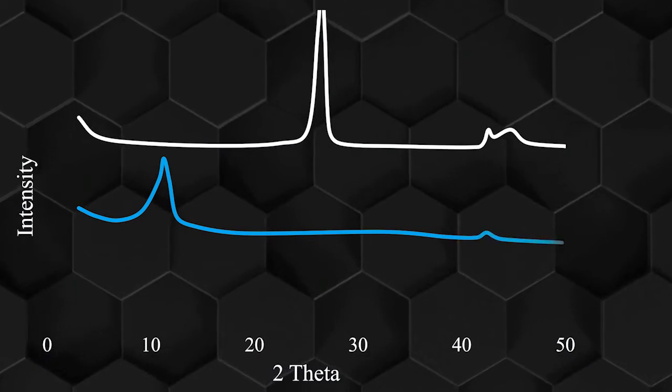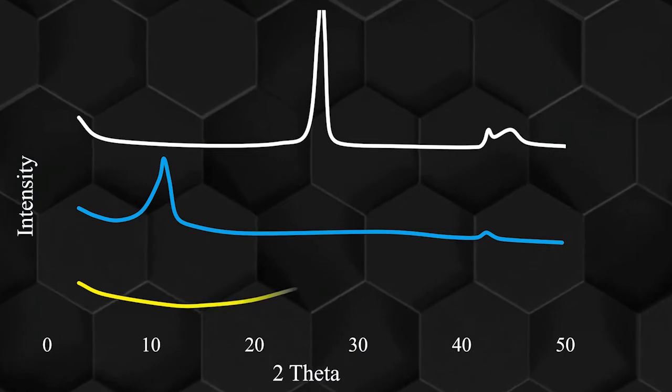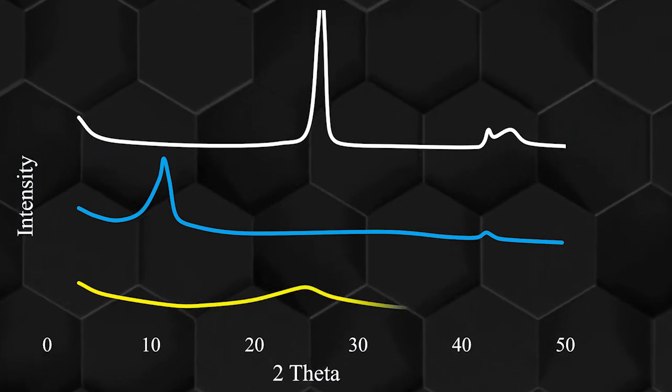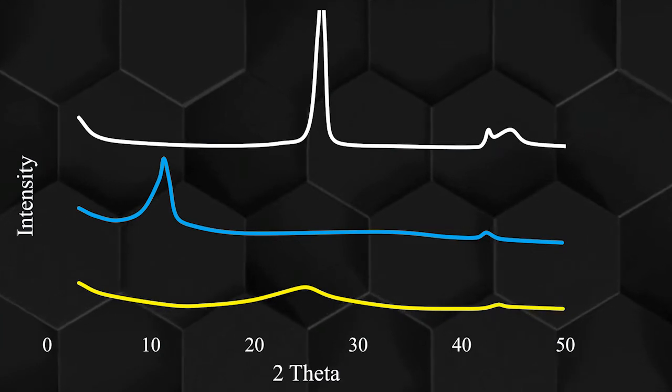If graphene oxide is reduced, this peak will disappear and a new peak will appear at 2 theta about 26 degrees. Due to the amorphous structure of reduced graphene oxide, this peak is wide and weak.